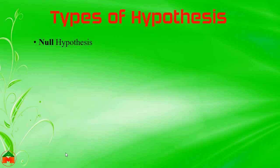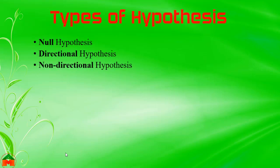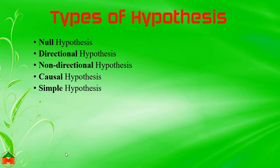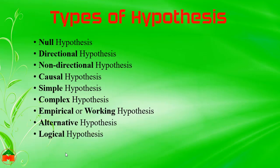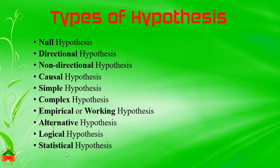Now we are going to see the types of hypothesis: Null Hypothesis, Directional Hypothesis, Non-directional Hypothesis, Causal Hypothesis, Simple Hypothesis, Complex Hypothesis, Empirical or Working Hypothesis, Alternative Hypothesis, Logical Hypothesis, and Statistical Hypothesis. These are some types of hypothesis.